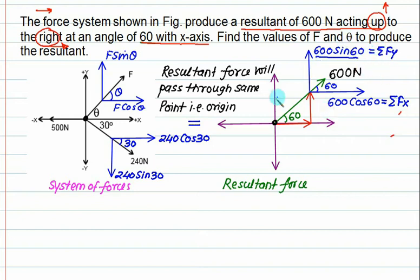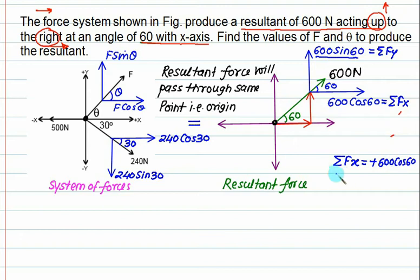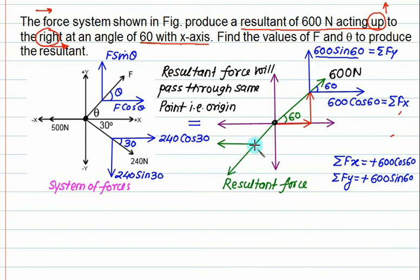Sigma Fy is the summation of all y-components. From this figure we collect sigma Fx. The 600 cos 60 term is taken as positive. Remember: if a force acts to the left, its Fx component is negative; if in the fourth quadrant, x is positive but y is negative. You use the sign according to the direction of the force.